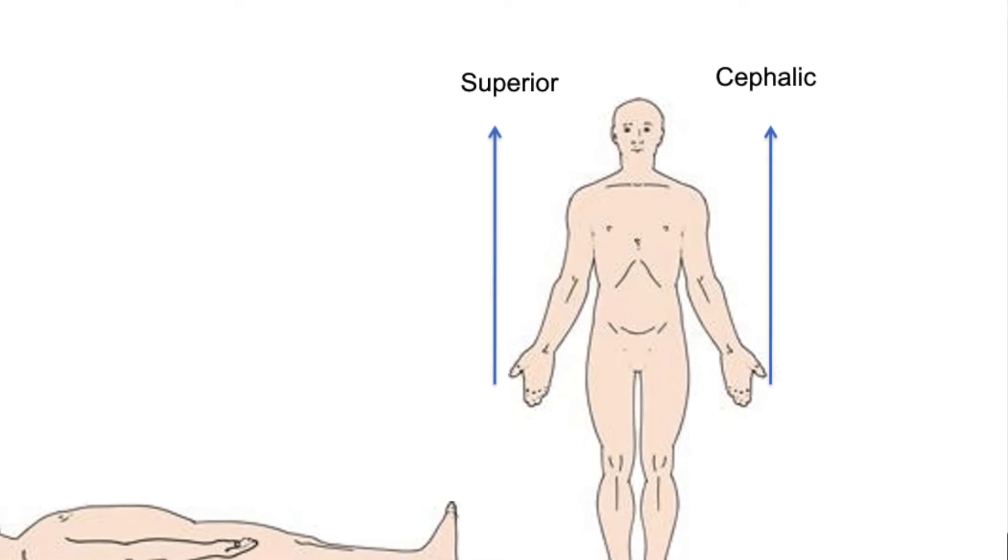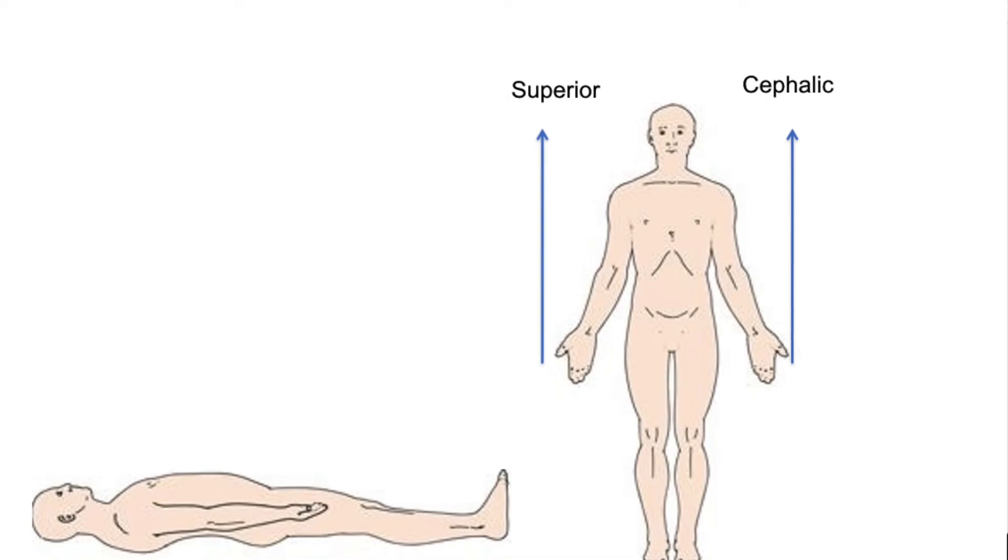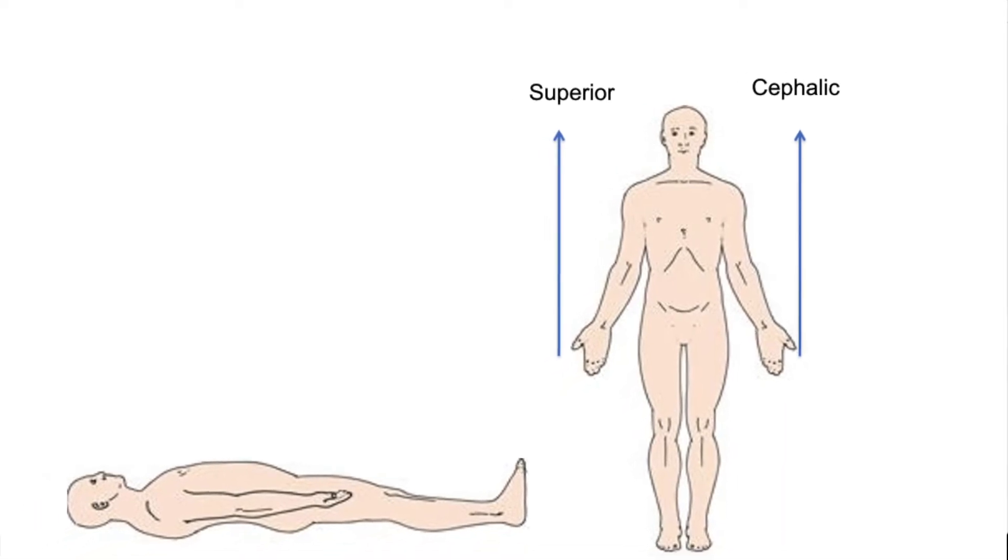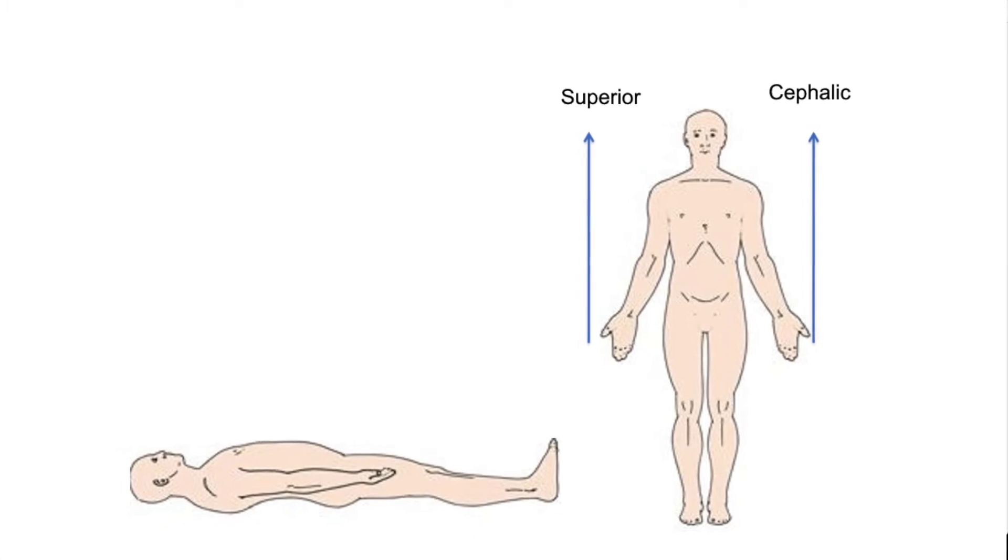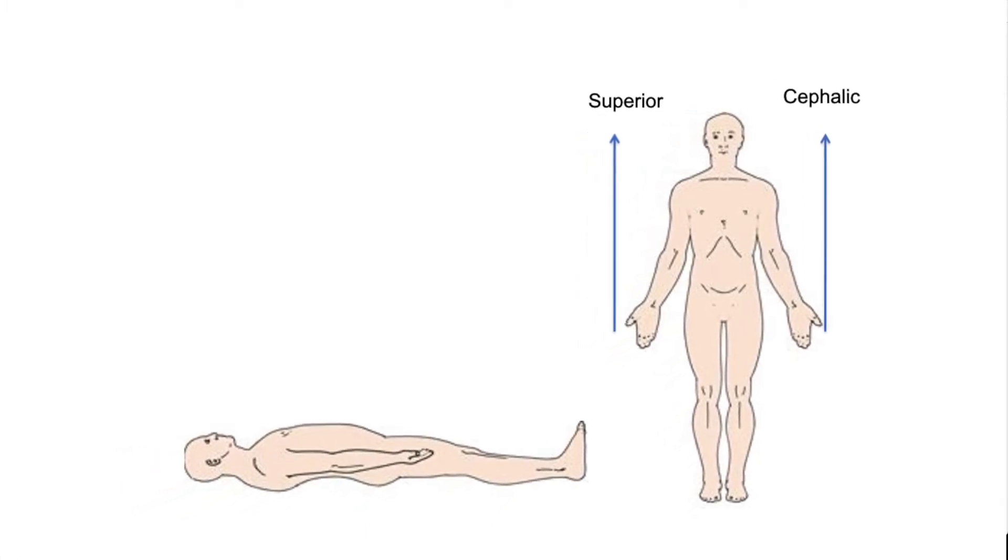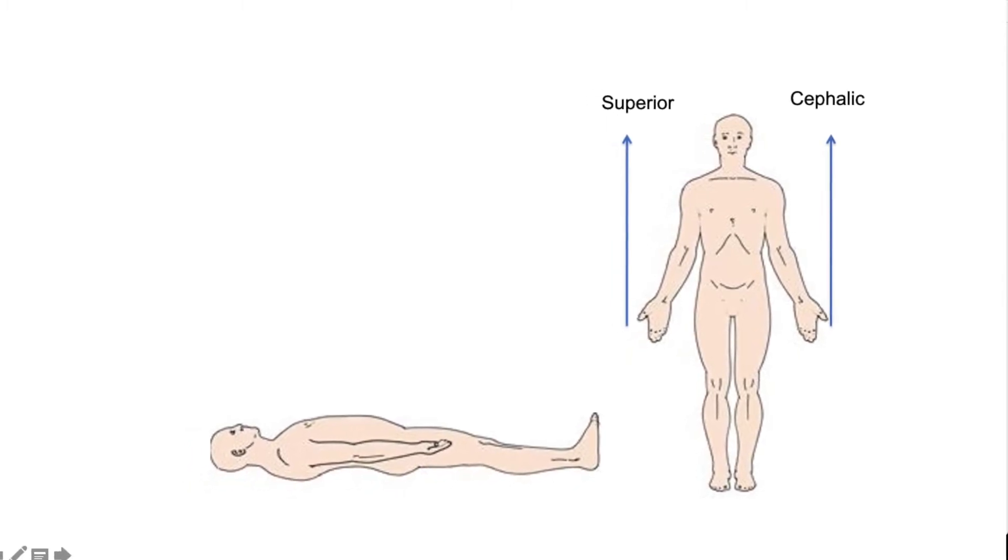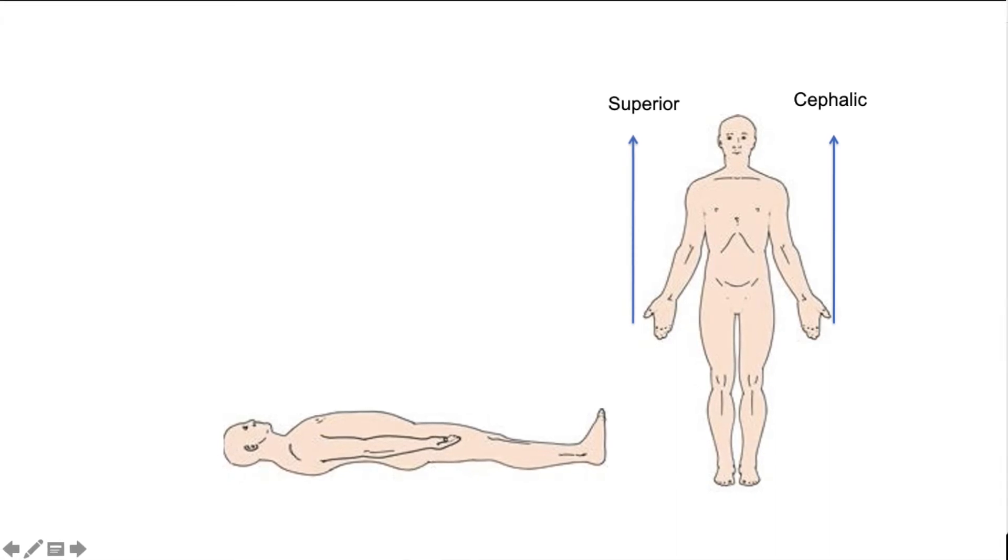Oh, because your body changes direction. Guys, if you are lying down on your back, meaning perfectly still, is your head now above your shoulders? No, it's not. Your head is now even with your shoulders. So your head is, when you're laying down, your head is no longer superior, but it is still cephalic, right?